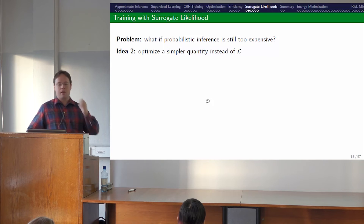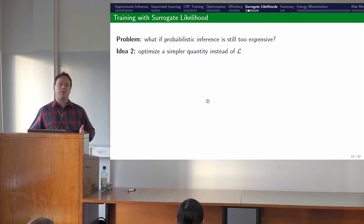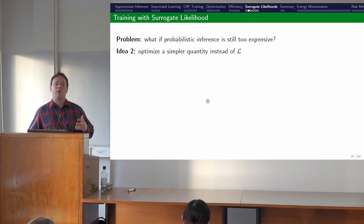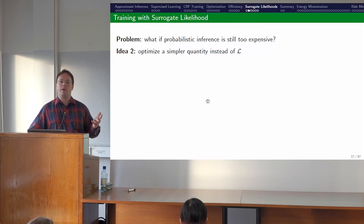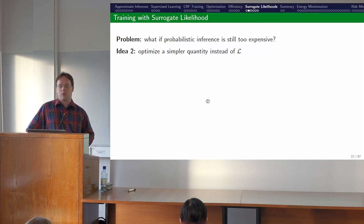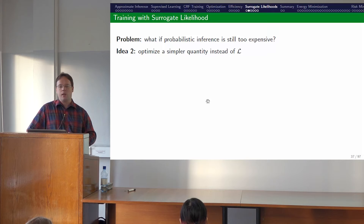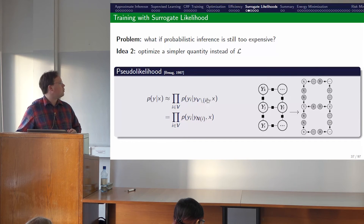What else can we do? As with mean field variational inference — where you solve a simpler problem hoping the answer is similar — we can do the same for conditional random field training. If probabilistic inference is too expensive, maybe we can minimize something related to the log likelihood of the data, but much easier to compute. This is the idea of surrogate likelihoods — different objective functions to minimize for a CRF. These are very commonly used when you have a model with many loops and cycles where probabilistic inference is hard. The first of that kind was so-called pseudo-likelihood.